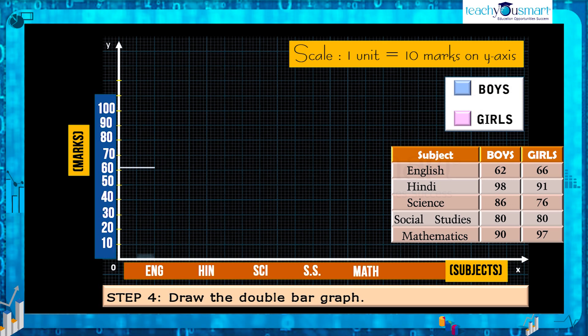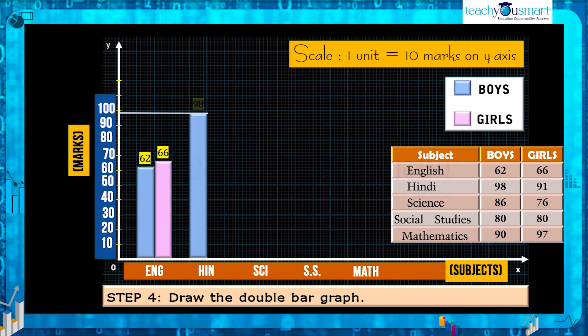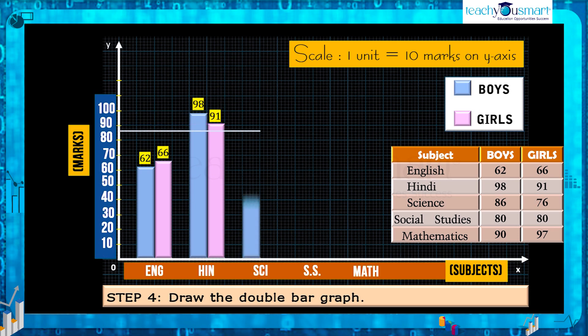Then draw the double bar graph. We will denote the mark of boys and the mark of girls with pairs of bars in which one bar will represent the average mark of boys and the other represent the average mark of girls.